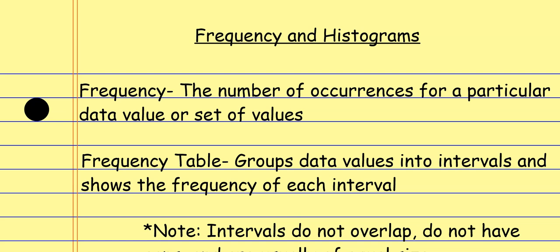Frequency is the number of occurrences for a particular data value or set of values. A frequency table is basically us organizing that frequency and displaying the data in a meaningful way. We split the data into groups — grouping the data values into intervals — and then show the frequency of each interval. We're lumping certain data values together and displaying the frequency of each of those groups.